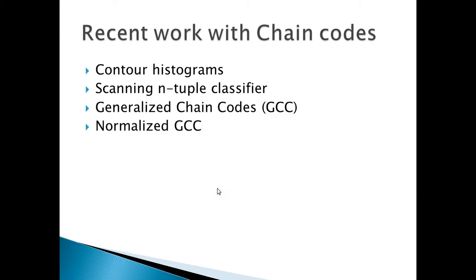Now let us discuss recent work done using chain codes. First, we have contour histograms — the contour histogram method using chain code helps encode individual segments of a character and compute differences between each trace path segment. Next, we have the scanning interval classifier, which utilizes Freeman chain codes to specify a one-dimensional representation of characters, defines relative offsets between its input point, and scans over the set of 1D representations of the character image. Finally, we have generalized chain codes, where the 8-connected chain codes have been extended to 8M directional chain codes, where M may be any positive integer usually not exceeding 10, to accommodate more sizes of contours. The normalized generalized chain code is another version of the GCC which does not require any pre-assignment of fixed ring size in the ring grid used for the GCC, which reduces complexity.